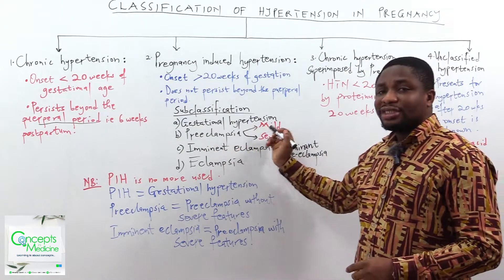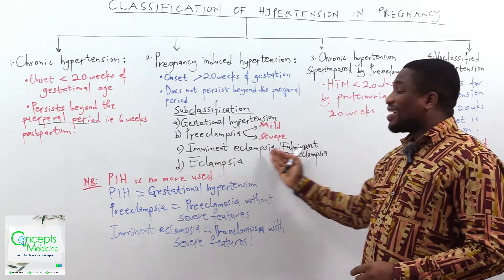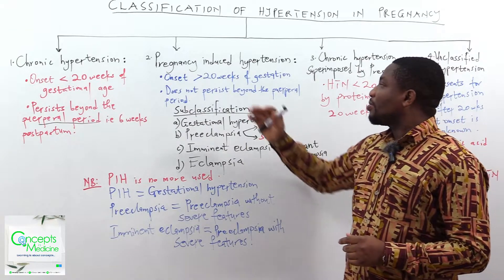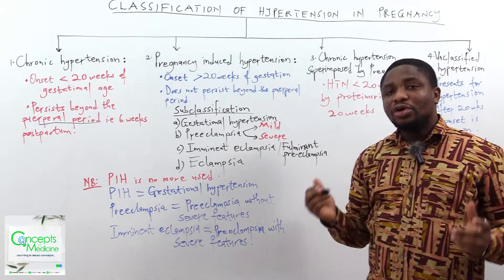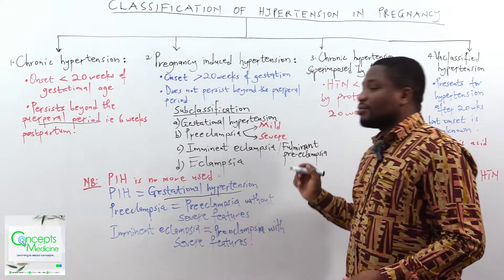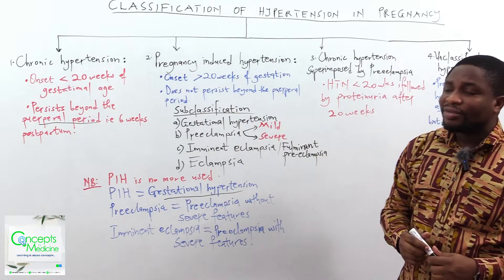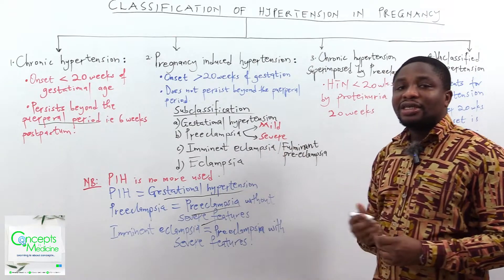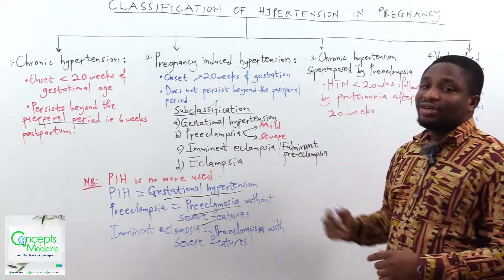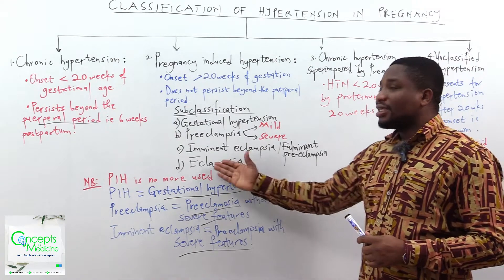The subclassification includes gestational hypertension; preeclampsia, which can be classified as mild and severe; imminent eclampsia, also called fulminant preeclampsia; and finally eclampsia. Under the current guidelines, pregnancy-induced hypertension is no longer used as a nomenclature — it is now synonymous with gestational hypertension. For preeclampsia as a whole, whether mild or severe, it is now reclassified as preeclampsia without severe features. Imminent eclampsia or fulminant preeclampsia is now reclassified as preeclampsia with severe features. Eclampsia remains eclampsia.